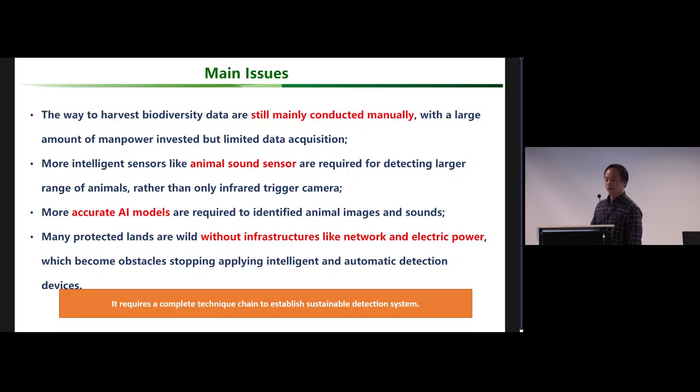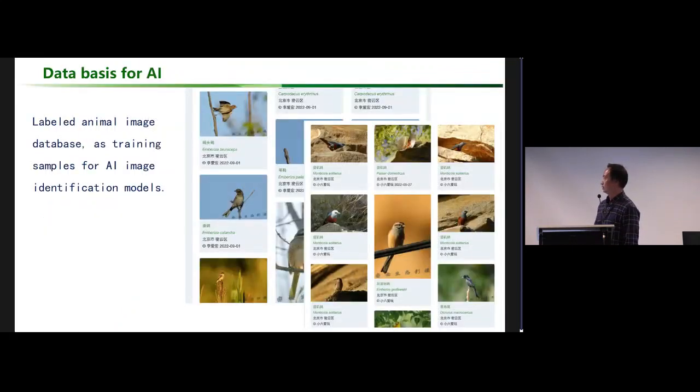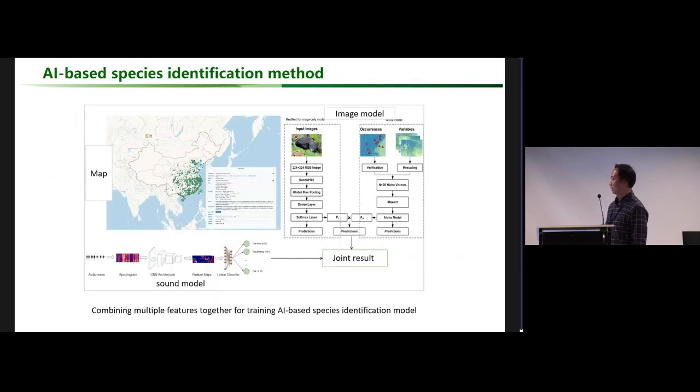Our project is to create and verify the complete technique chain to establish a sustainable detection system. Fortunately, we have created a large database for Chinese species, including the Catalog of Life China, labeled image databases, and labeled animal sound databases. All this data can be trained for AI classification models.